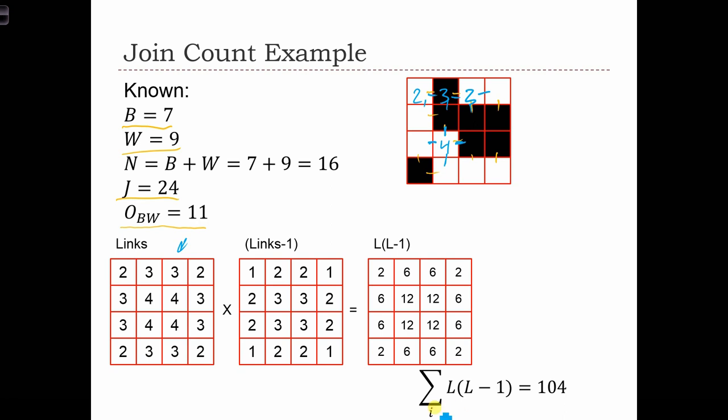The formula calls for the sum of links times links minus 1. So here we have links minus 1. We've just subtracted 1 from each link count. And over here, we have links times links minus 1. So in order to get this value, we just took link i times link i minus 1.